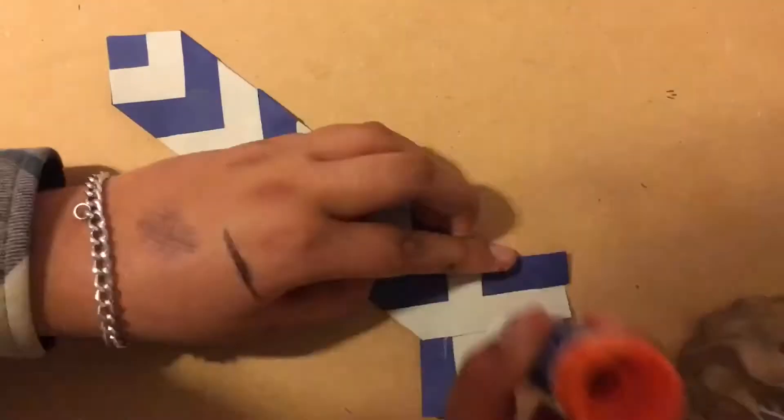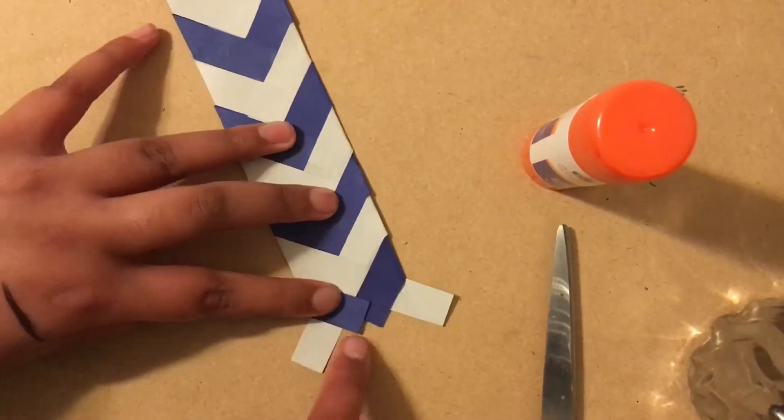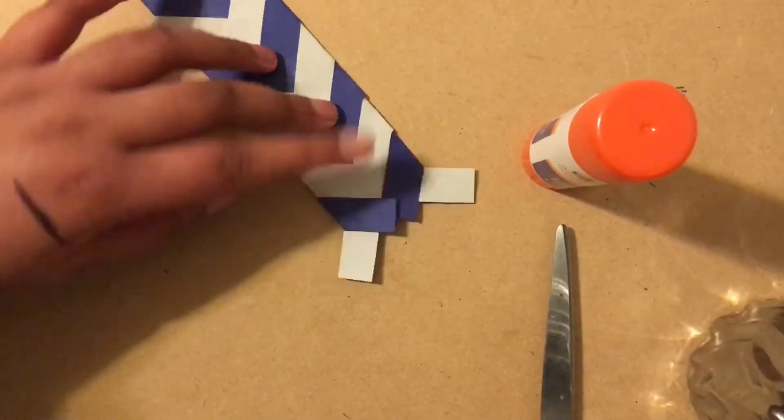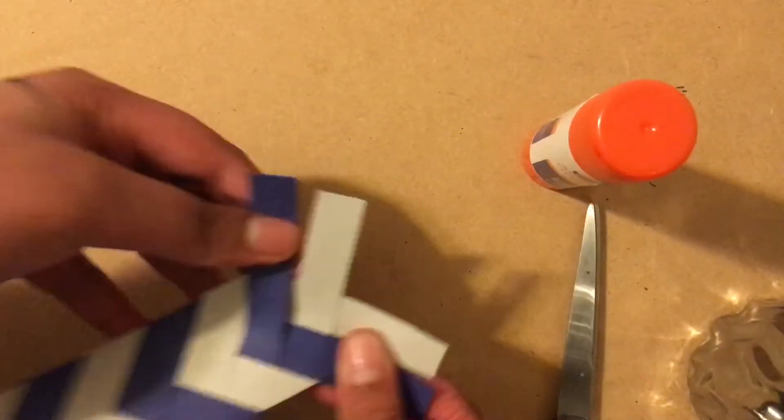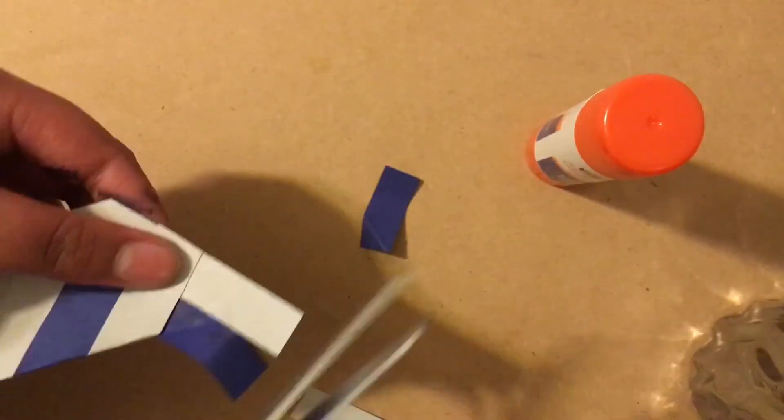Once you find yourself in a place where it does not completely match up, then that's where you know to unfold that piece and just cut it off, because it's not going to look nice and it's not going to get folded anymore.